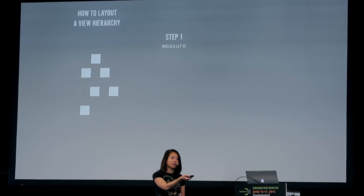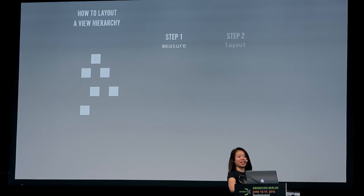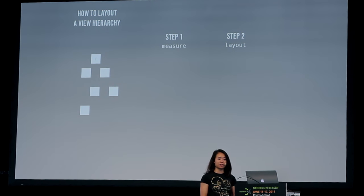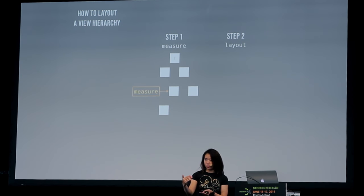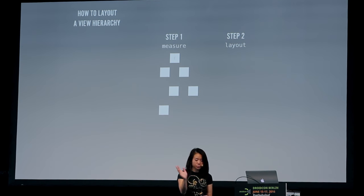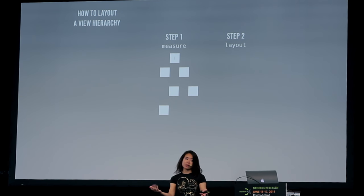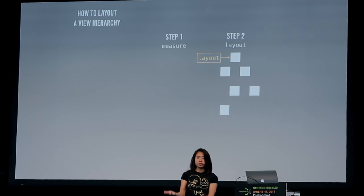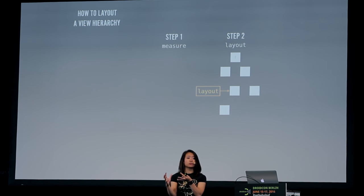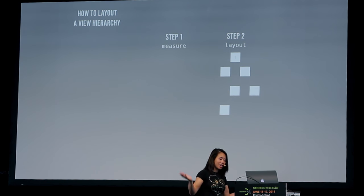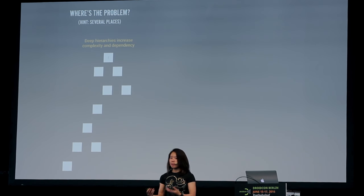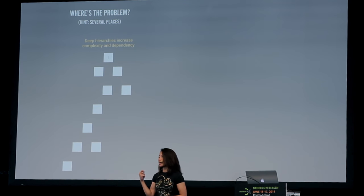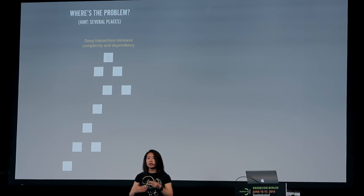This is the layout phase, in which the platform decides where views should go. Your view hierarchy is taken and Android does a depth-first traversal from parent to children to siblings, deciding for each view how big it should be. Then the same thing happens for layout — again, depth-first traversal, going from parent to child and figuring out where individual views need to go. The more deeply nested things are, the more interdependencies, the more processing is needed to handle that layout and put it on the screen.